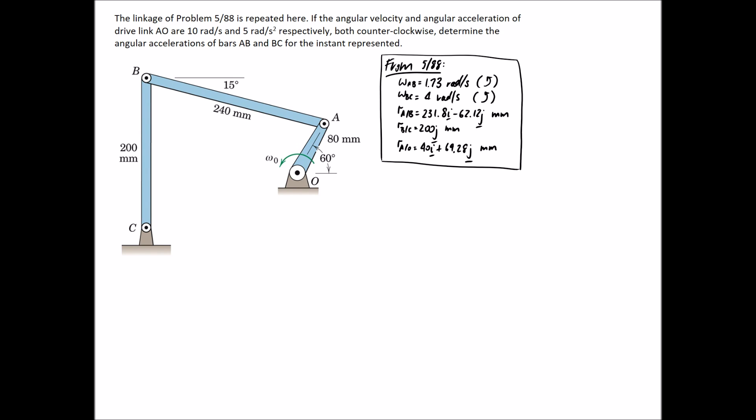So I went through and solved question 5/88, which was basically doing the velocity analysis on this linkage. This current question is looking at doing the acceleration analysis on this linkage. In order to do the acceleration analysis, we need to know the angular velocities of all the components.